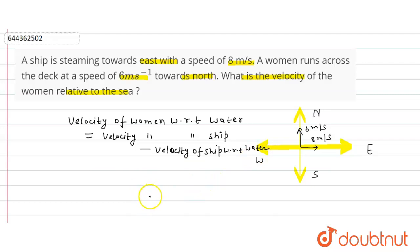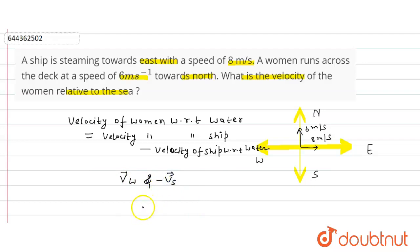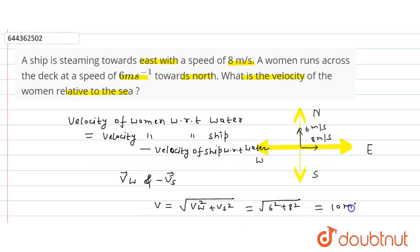The relative velocity of the woman with respect to water is along the resultant of the velocity of the woman and the negative of the velocity of the water. So the magnitude of the velocity will be under root of V_woman squared plus V_ship squared, that is equal to √(6² + 8²), which equals 10 meter per second.